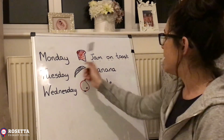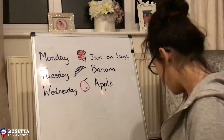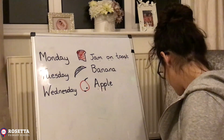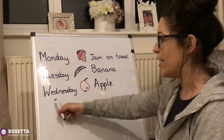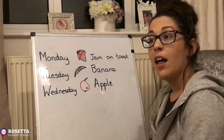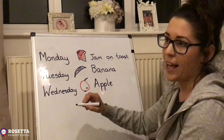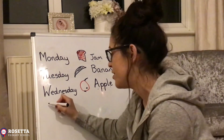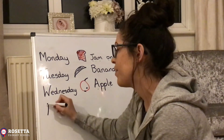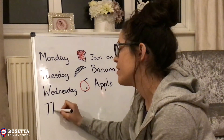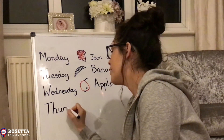So on Monday I've got jam on toast, on Tuesday I'm having a banana, on Wednesday I'm having an apple. My next day is Thursday. Thursday has a digraph at the front of the word — a t and an h working together to make the 'th' sound: Thursday.